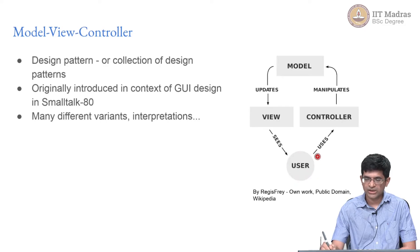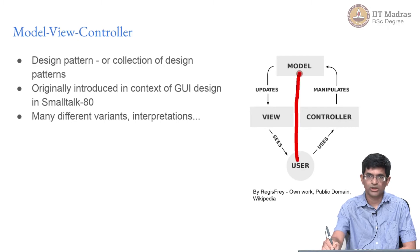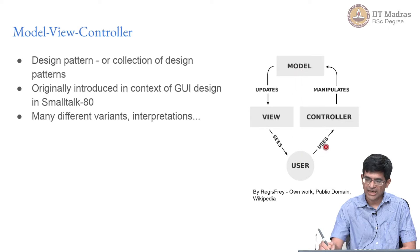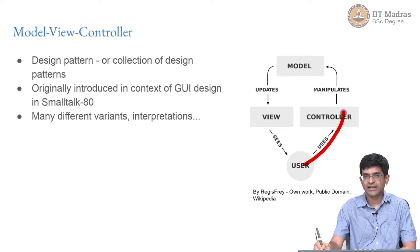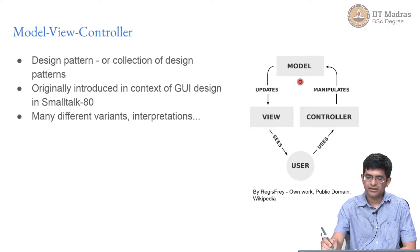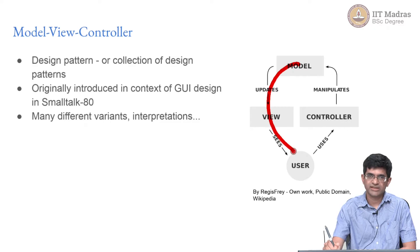What we are talking about is that the user should not directly manipulate the data — in other words, there is no direct user-to-model connection. I cannot go in and directly make changes in the database. I have to use a controller, which means that the kind of changes I can make are automatically constrained. In turn, the model will then determine what the user gets to see by means of controlling the view.